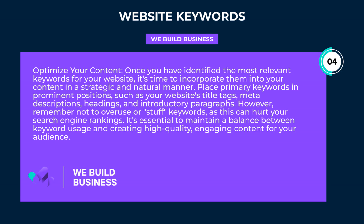Optimize your content. Once you have identified the most relevant keywords for your website, it's time to incorporate them into your content in a strategic and natural manner. Place primary keywords in prominent positions, such as your website's title tags, meta descriptions, headings, and introductory paragraphs.